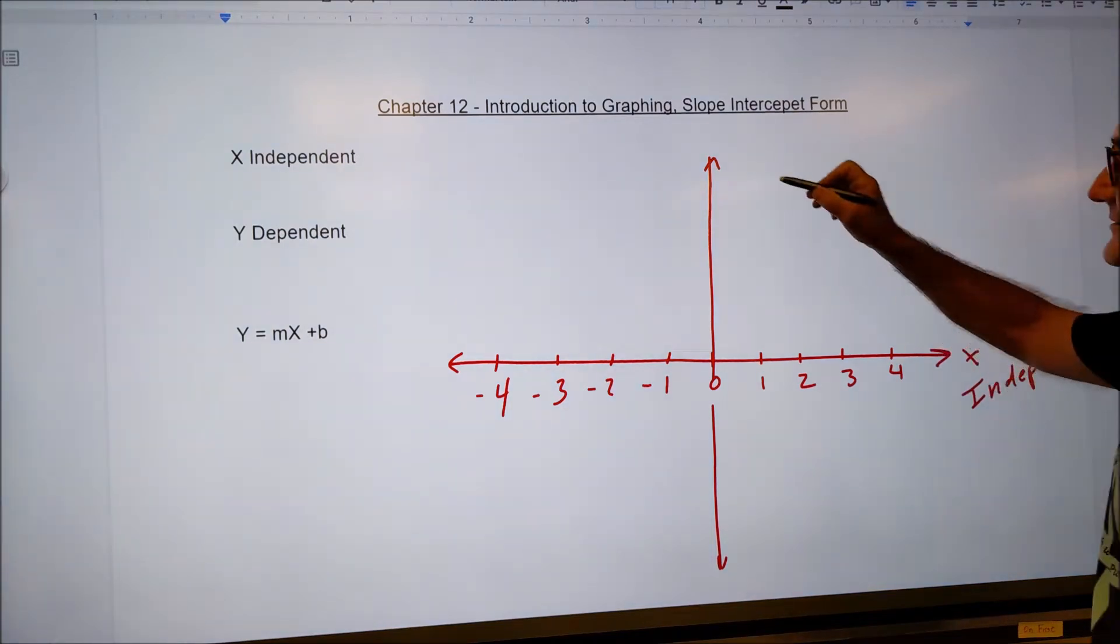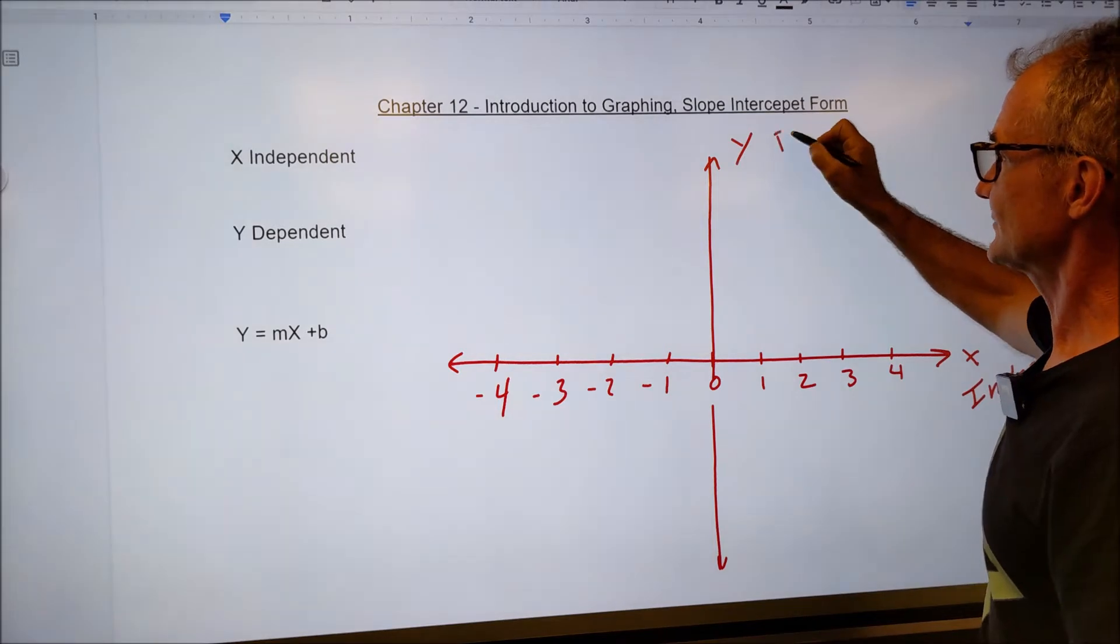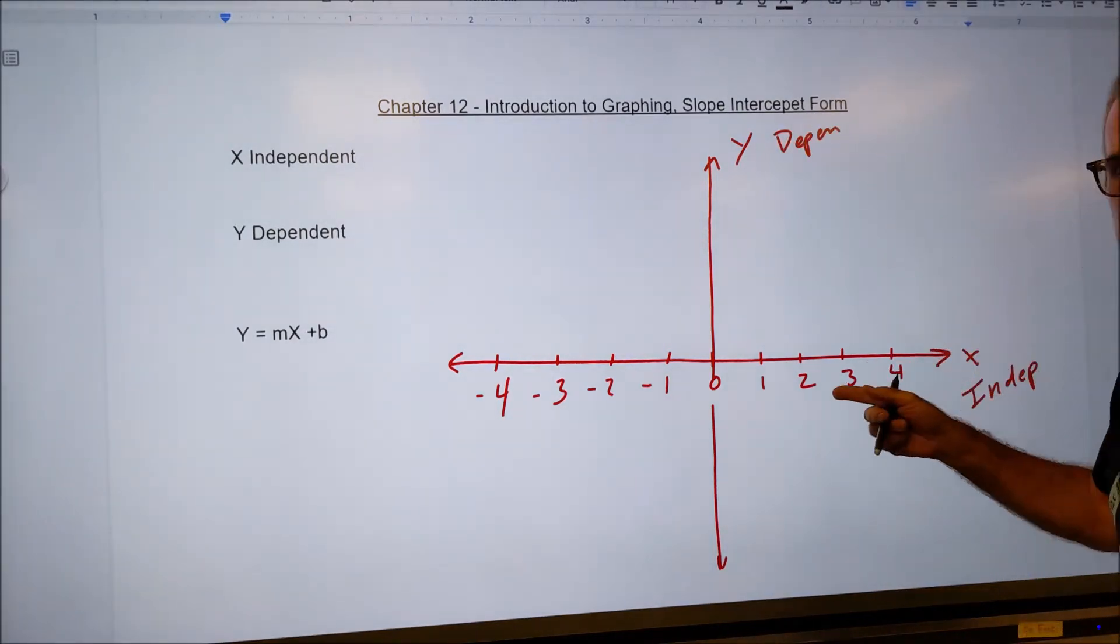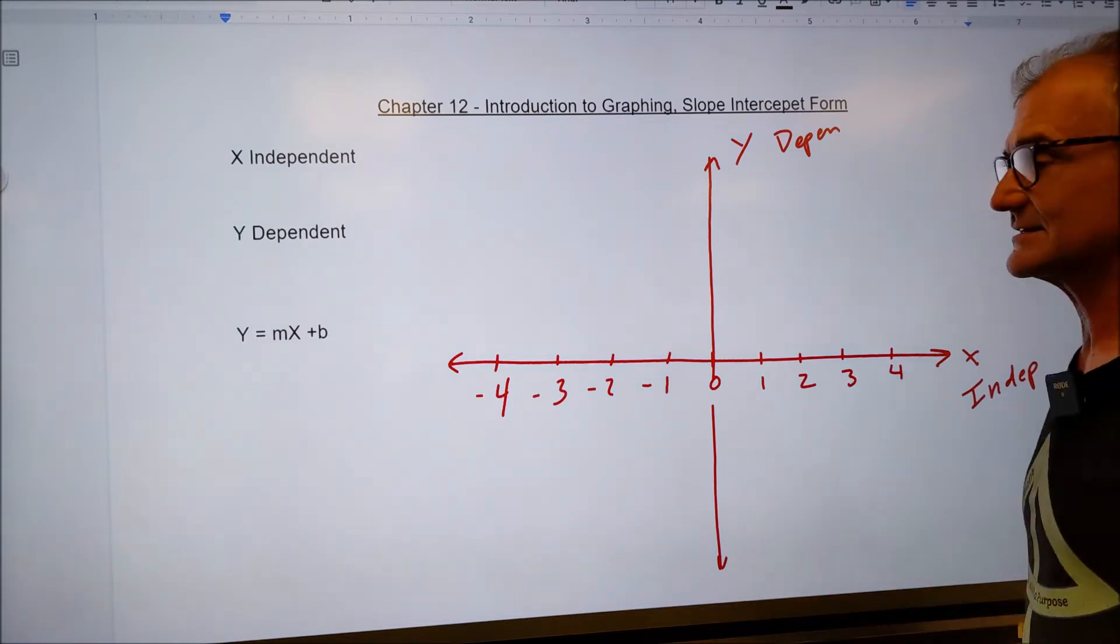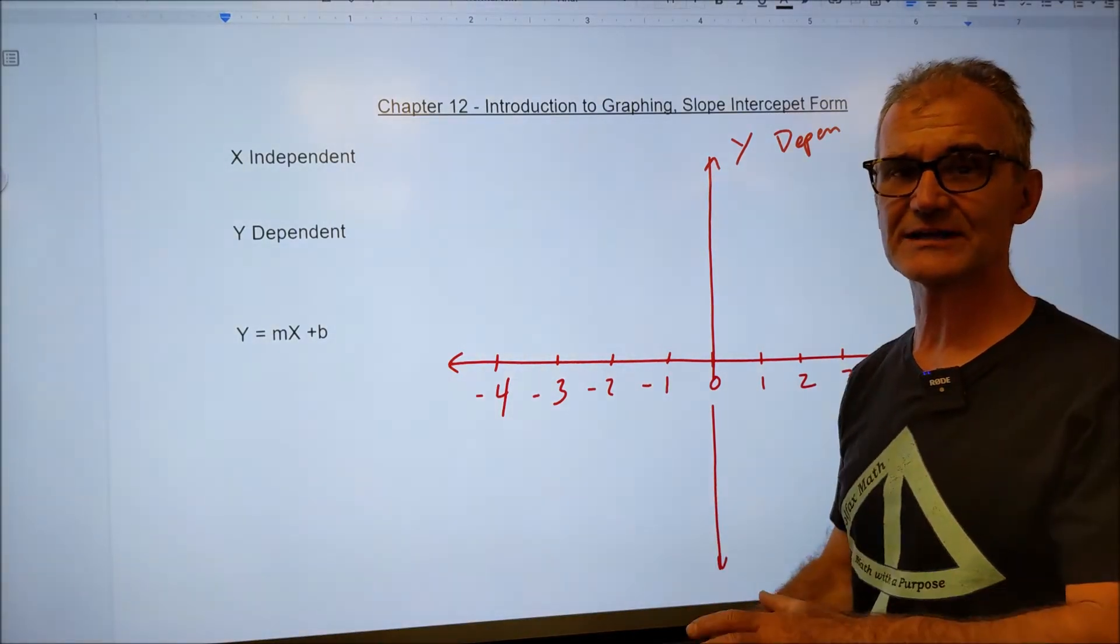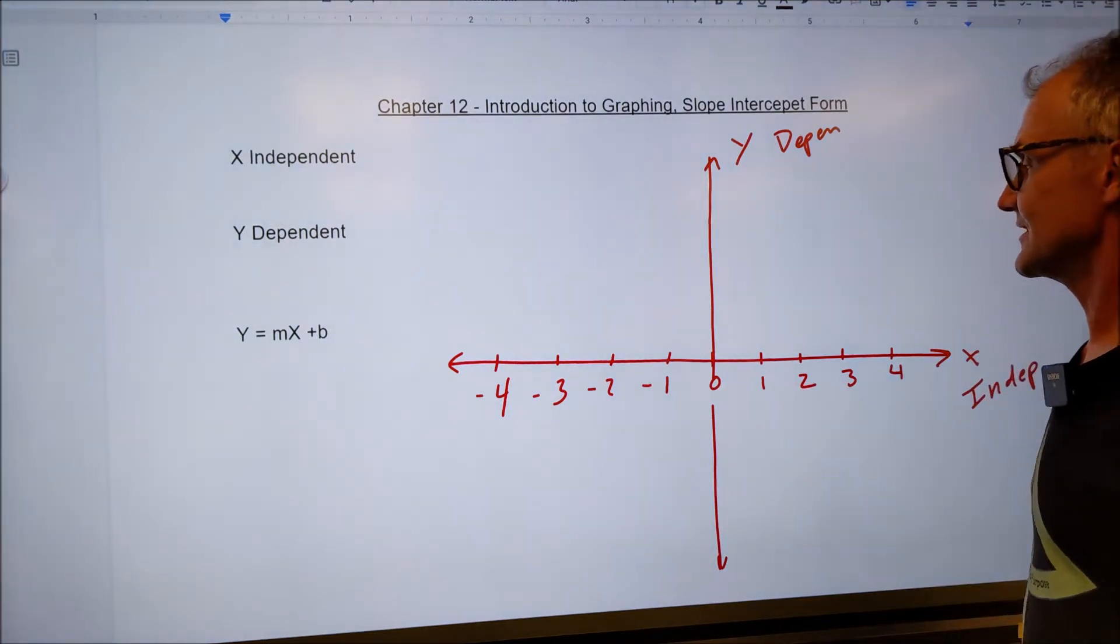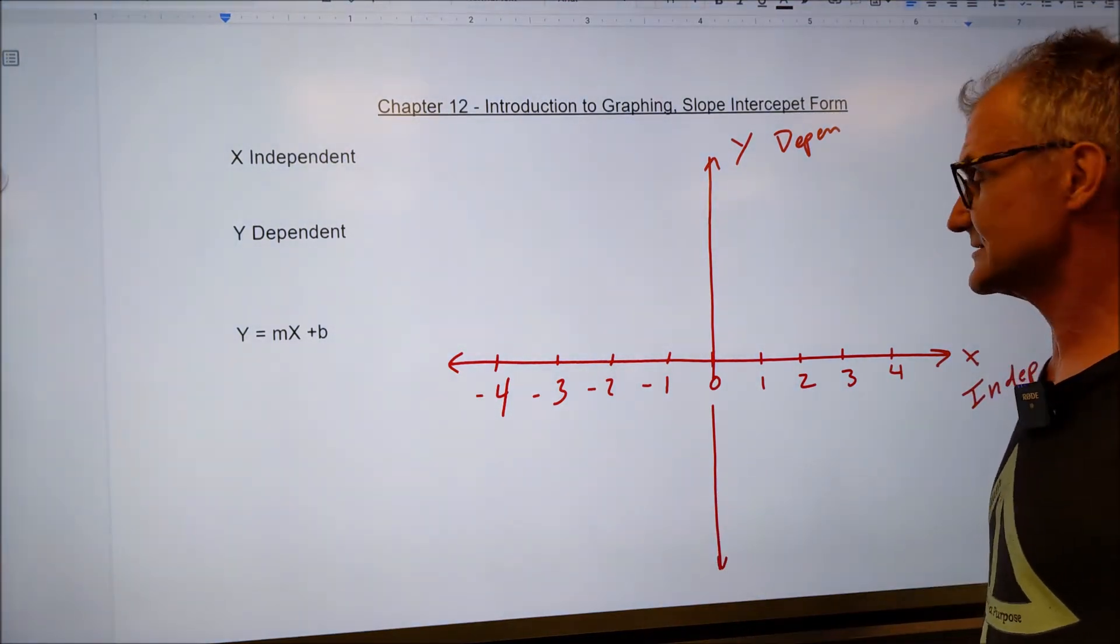And that vertical axis is y, also known as your dependent variable. The y value depends on what you pick for x. This graphing has tons of applications from finance to engineering, design. It's called the Cartesian coordinate system.